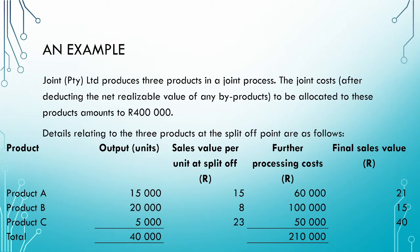Let us use a small example to see how the constant gross profit percentage method works. We have a company called Joint that produces three products in a joint process. The total joint costs amount to 400,000 Rand. We have already deducted the net realizable value of any by-products in arriving at this 400,000 Rand. Always remember to adjust the joint costs for any by-products, scrap, and waste before allocating the joint costs to the joint products.